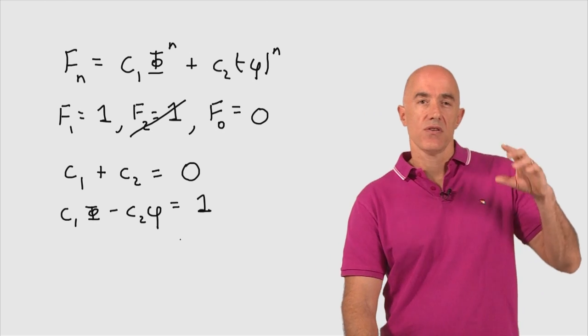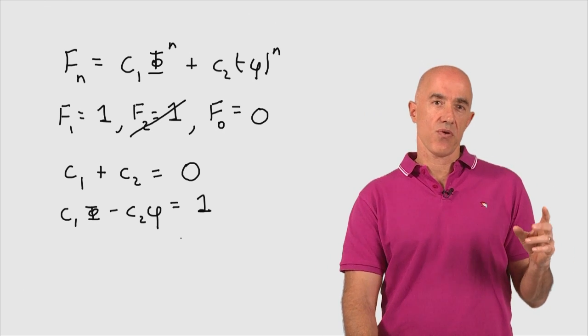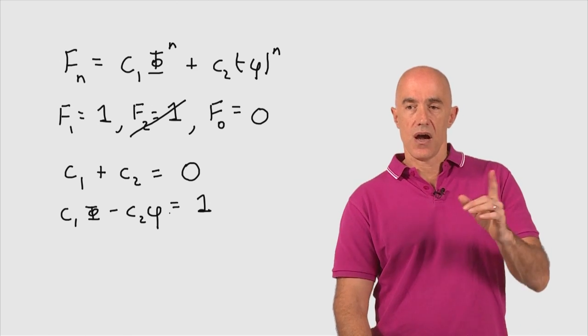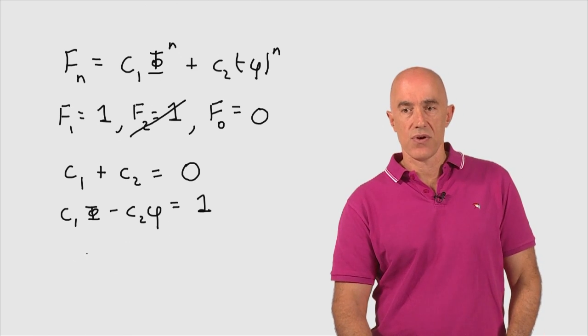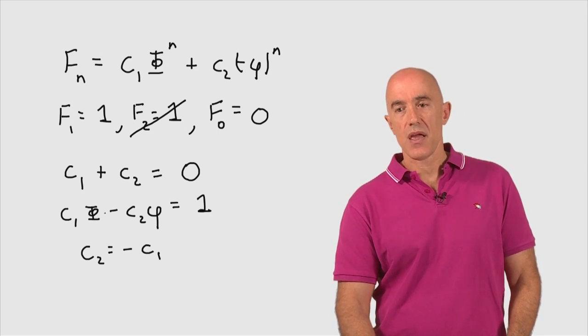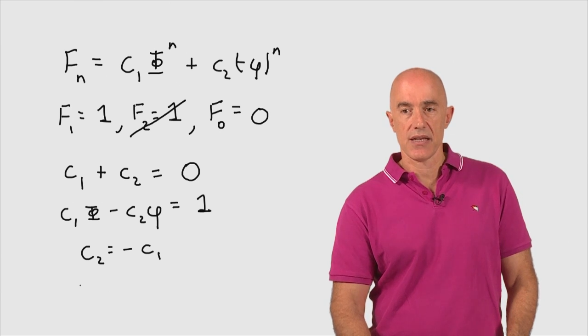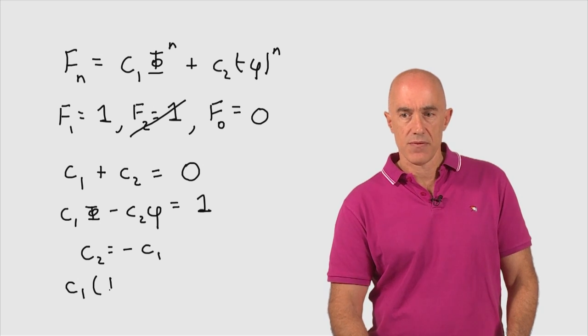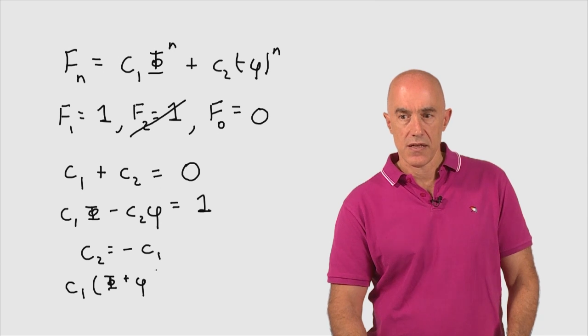So now we have two equations, two linear equations, two unknowns. C1 and C2 are the unknowns. We can eliminate C2. So C2 is equal to minus C1. And substitute that into the second equation. So we end up with C1 times big phi plus little phi equals 1.